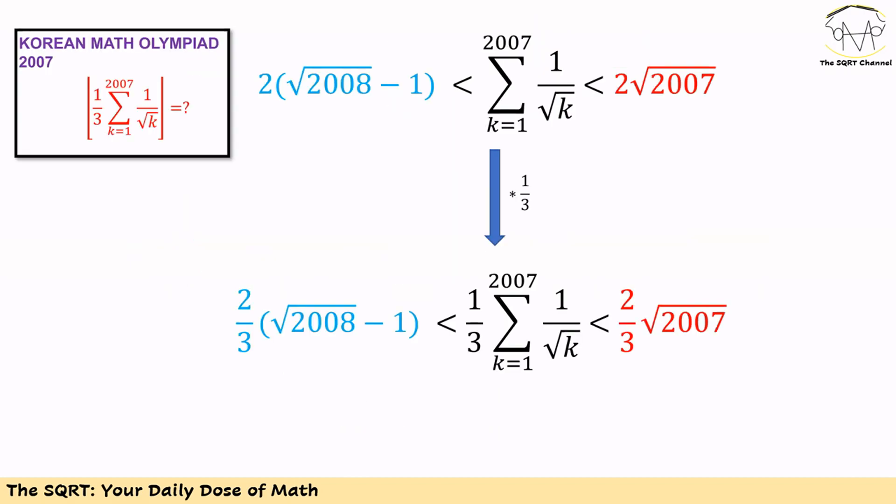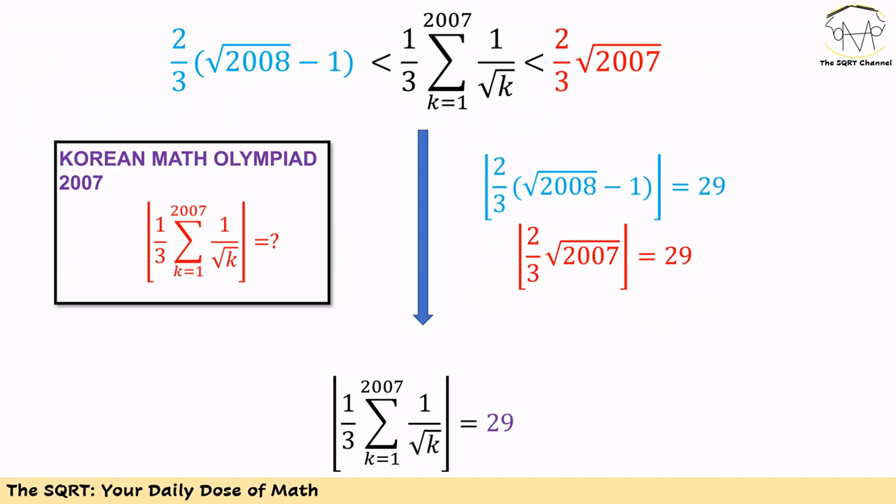By now, we have the expression bounded between two values — a lower bound and an upper bound. Remember, we wanted 1 over 3 times this expression. So let's do that first, and then we need to apply the floor operator on it. Remember, the floor of x is basically the integer part of x. So let's calculate the integer part of the values we have for the lower bound and upper bound.